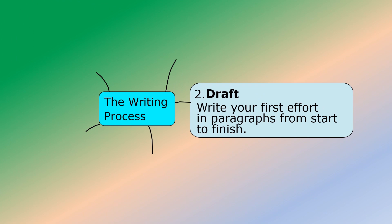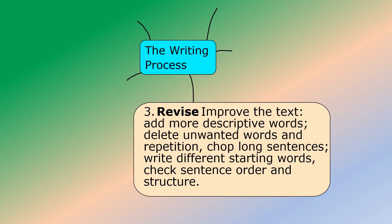Step two in the writing process: draft. Write your first effort in paragraphs from start to finish — all the paragraphs. Step three: revise. Improve the text — add more descriptive words, delete unwanted words and repetition, chop long sentences, write different starting words, check sentence order and structure. Any one or a combination of these actions you will take.